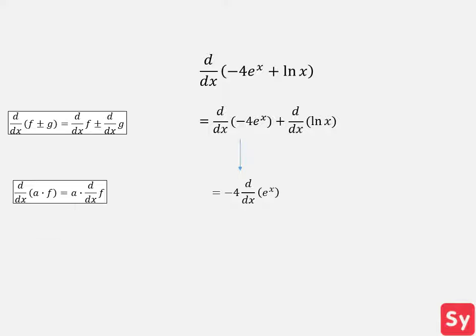Next, we recall the derivative of e to the x, which is just e to the x, and we'll plug that in. Now we can compute the derivative of ln of x. We recall the derivative of ln of x, which is 1 over x. Now we can add these derivatives together and get negative 4 times e to the x plus 1 over x as our answer.